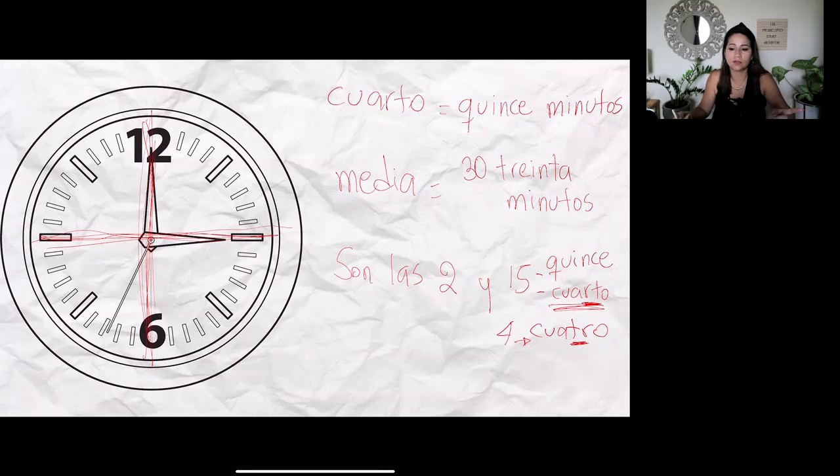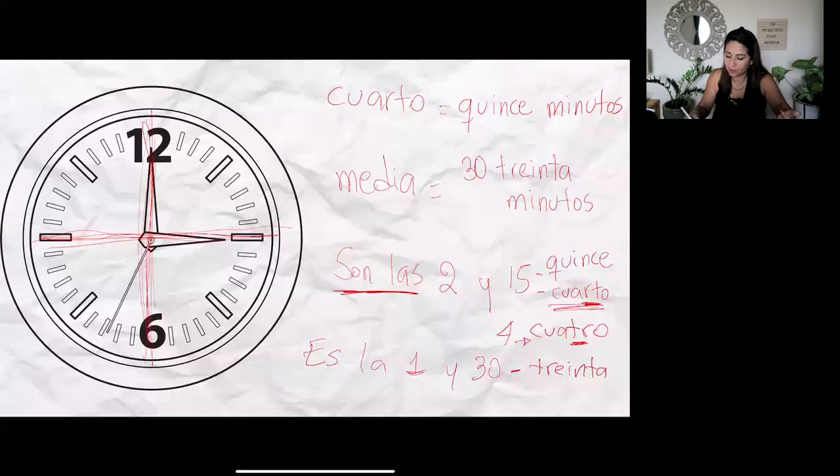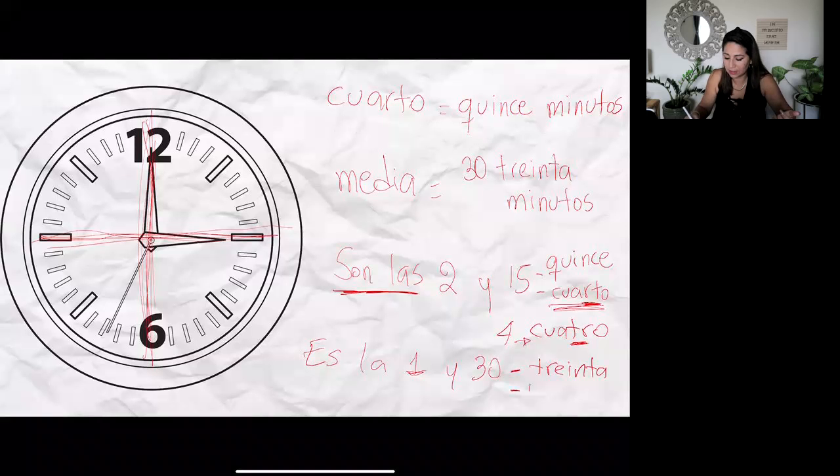If it's a time that begins with one, so like let's say one and a half, I would have to say not son las but es la, es la una y, so for thirty I could say treinta if I want, or I could say es la una y media. Okay, so that's it for quarter and a half.